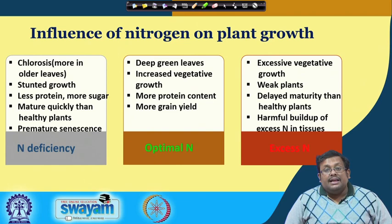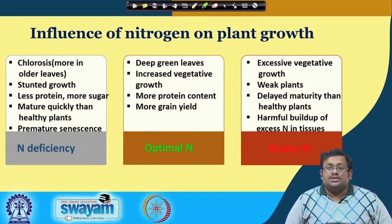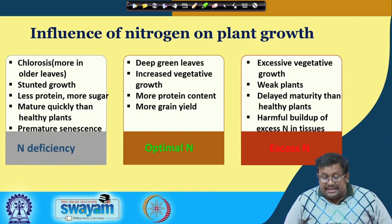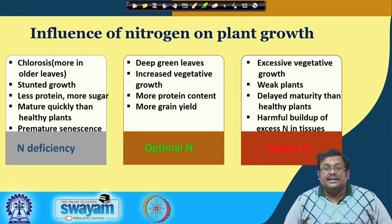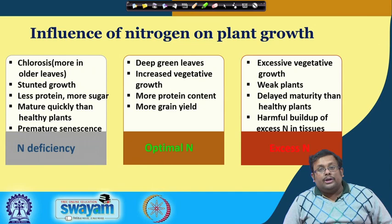These indicate optimal nitrogen content. Excess of nitrogen is also harmful — both deficiency and excess of any particular element are harmful. When there is excess nitrogen you will see excessive vegetative growth, weak plants, and subsequent lodging of the plants, delayed maturity compared to healthier plants, and harmful build-up of excess nitrogen in tissues.